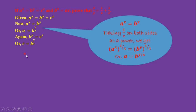From B^y = C^z, we get C = B^(y/z). Now we have the values of both A and C.